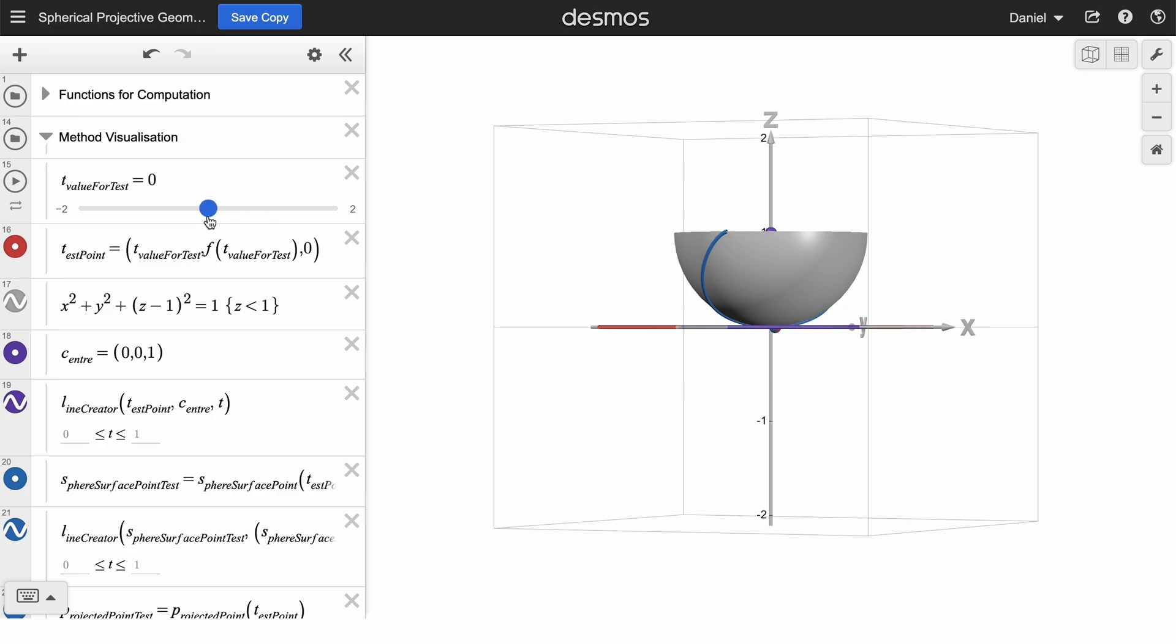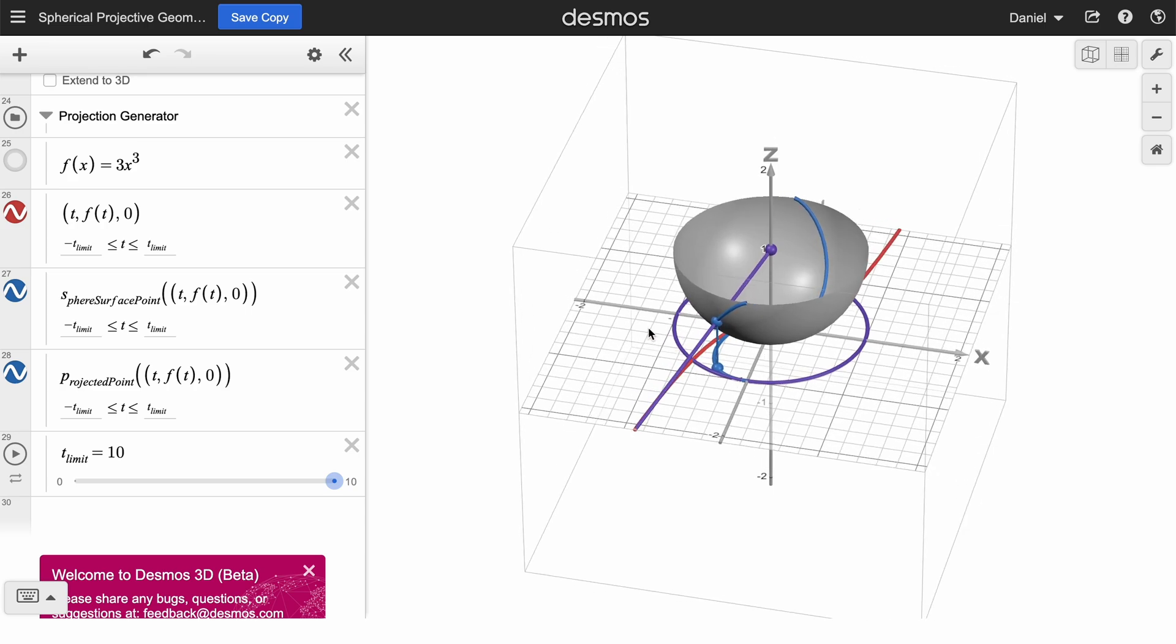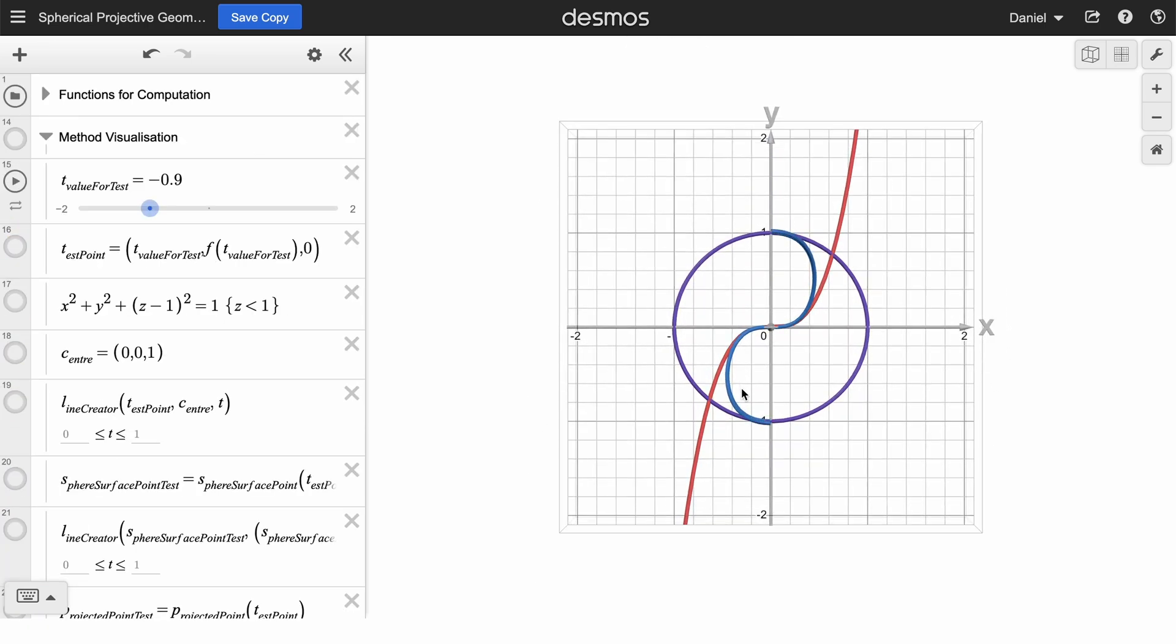And as the red point moves along the xy plane, that blue point on the hemisphere also traces out this path. Lastly, tracing out the path of this blue point on xy plane gives the final projection of y equals x cubed. If I now disable the hemisphere and look from directly above, you can see how the y equals x cubed curve has been transformed into this curve that fits within the circle.